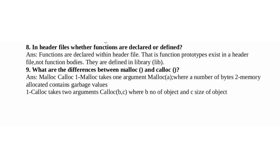What are the differences between malloc and calloc? Malloc takes one argument, malloc(a), where a is the number of bytes. And in malloc, memory allocated contains garbage values. Calloc takes two arguments, calloc(b, c).